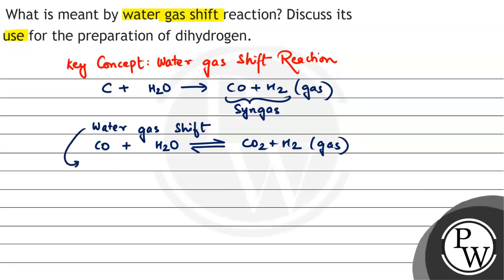Basically, what is water gas shift reaction? Water gas shift reaction is the reaction between carbon monoxide from syngas and water in the form of steam to form carbon dioxide and hydrogen. This is what is water gas shift reaction.